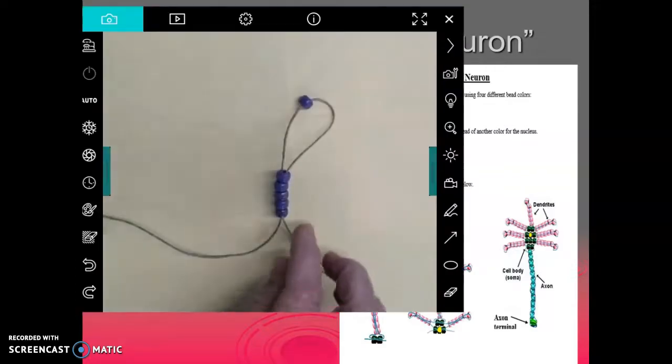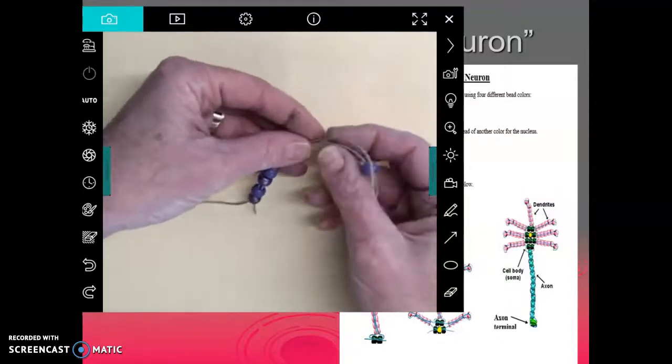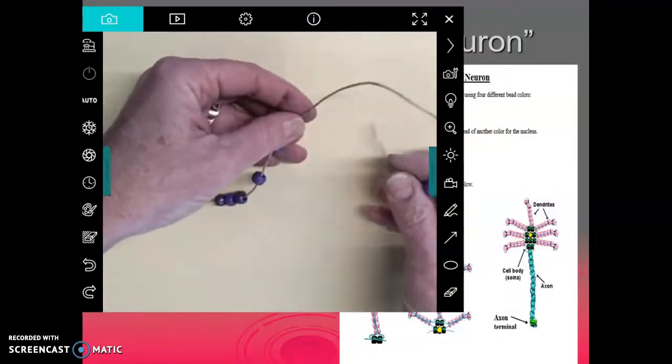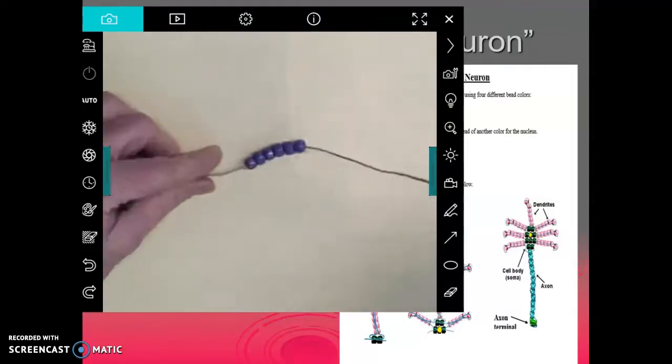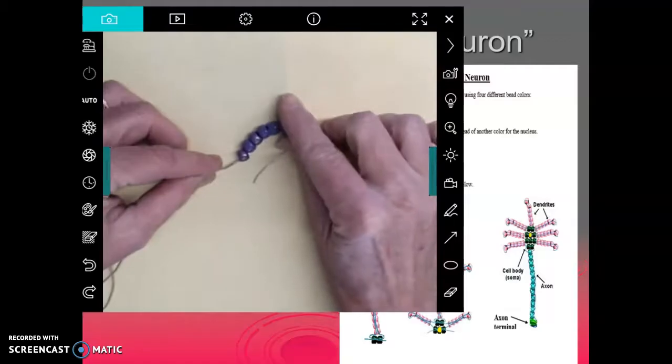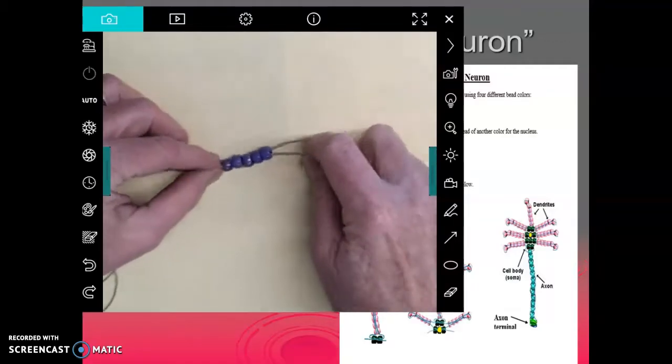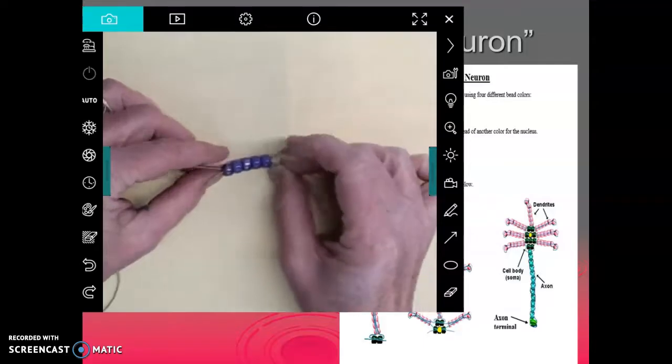So for me, I have for myself purple, so I'm going to use my purple beads here. So what you do is you take your purple beads and you put 6 of them on your string. Then you skip the end one and go back through the other 5 with your string. This makes your first dendrite.